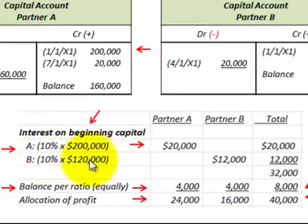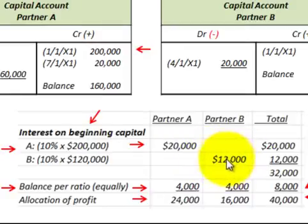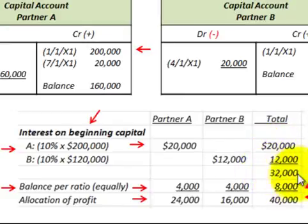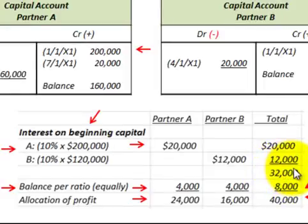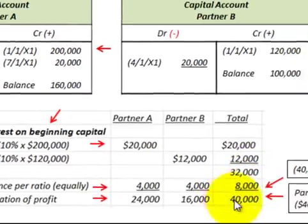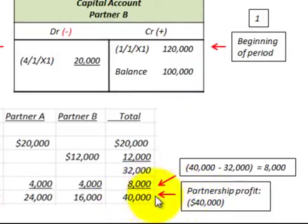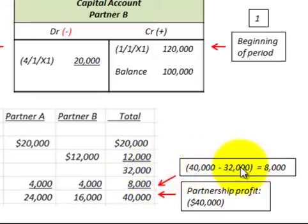Based on the beginning capital balance for partner B, 10% times their beginning balance of $120,000 gives partner B a $12,000 allocation. Totaling those up — $20,000 and $12,000 — we've got $32,000 allocated for the year. The partnership profit for the year was $40,000, so the difference between $40,000 and $32,000 gives us $8,000 more to allocate.